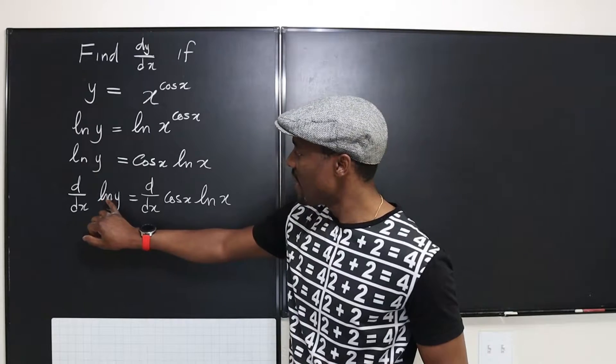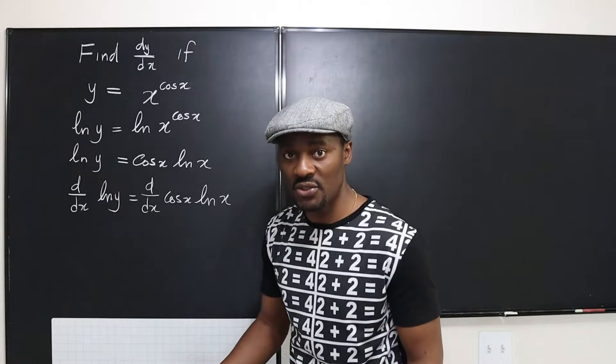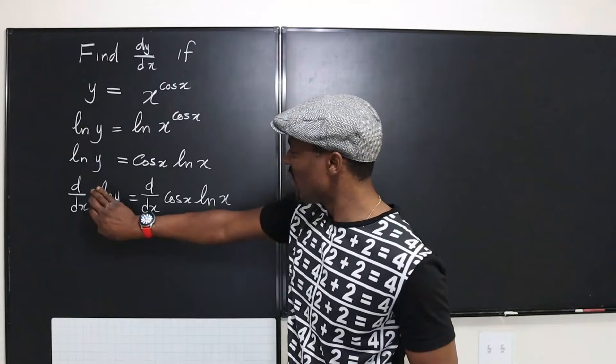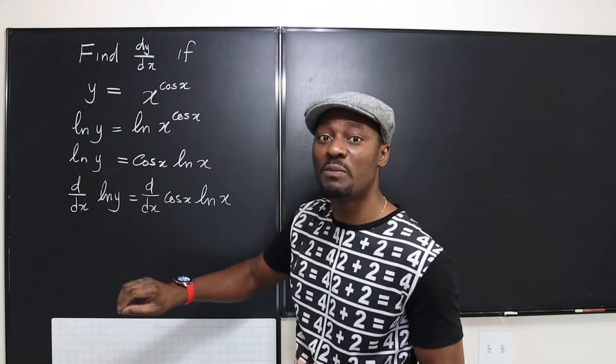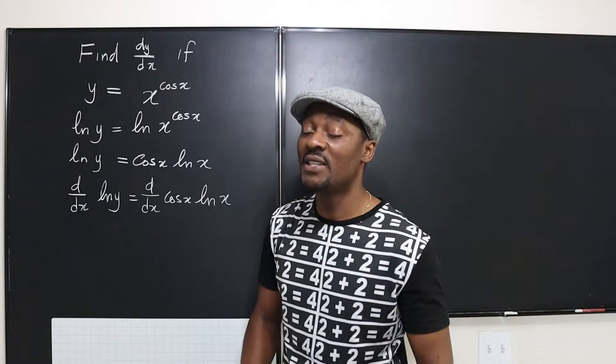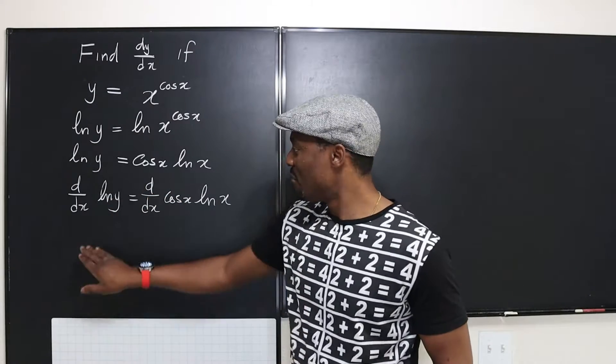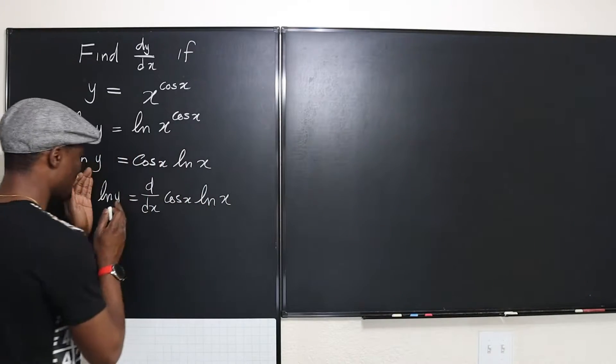In differentiating the left-hand side, you see you have y, but you want to differentiate with respect to x, so you'll be doing implicit differentiation, which simply means differentiate normally as if you're differentiating with respect to y. But tell yourself, no, I'm differentiating with respect to x, so I have to multiply my answer by dy/dx. I've explained why you do that in other videos.